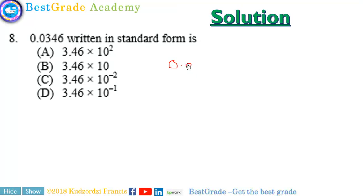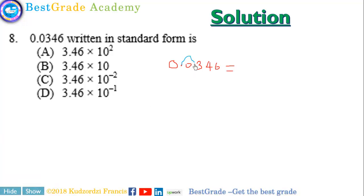We want to write this in standard form. So 0.0346 — we move the decimal point until the first number is between 1 and 10, less than 10. So we have 3.46 times 10 to the exponent negative 2. That is the correct answer.